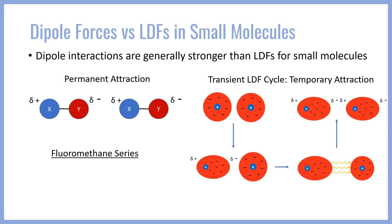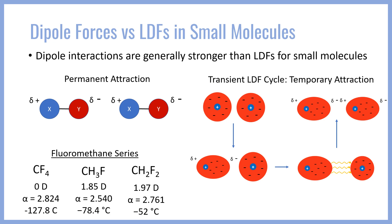We can see this play out pretty clearly in some fluoromethane species. These three molecules vary only in the number of fluorines present, which changes their chemical properties. The left molecule, tetrafluoromethane, has four fluorines and is completely nonpolar due to the symmetry of the tetrahedral geometry. However, it has the largest electron cloud — hence it has the largest alpha value, or the largest polarizability value, of all three compounds, and hence has the strongest London dispersion forces out of all of these. However, it has a zero Debye dipole moment and as such experiences no dipole-dipole forces.